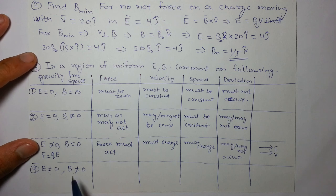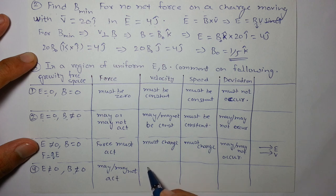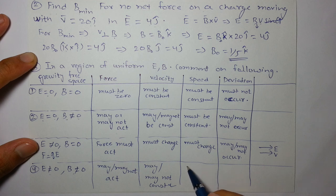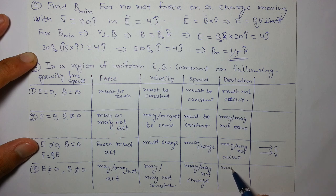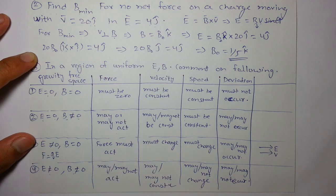Last part, both are non-zero. Then definitely force may or may not act because both forces can also cancel each other. May or may not act. Velocity may or may not be constant, may or may not be constant. And similarly speed may or may not change, may or may not change. And deviation may or may not occur, may or may not occur. These are some cases you should know, very very important questions on circular motion.